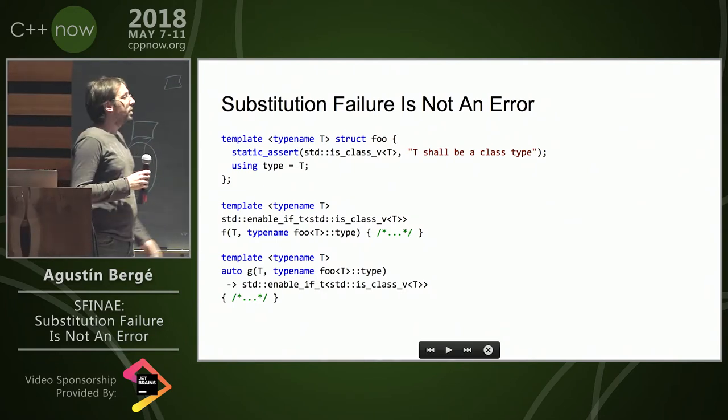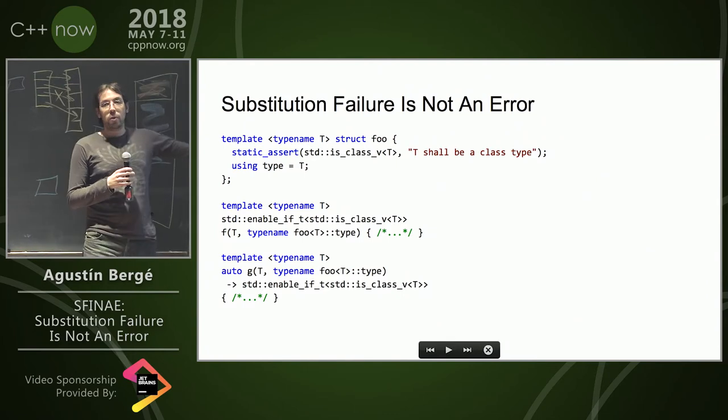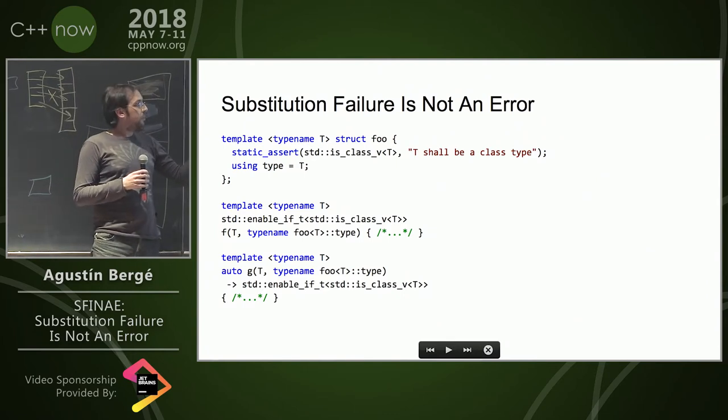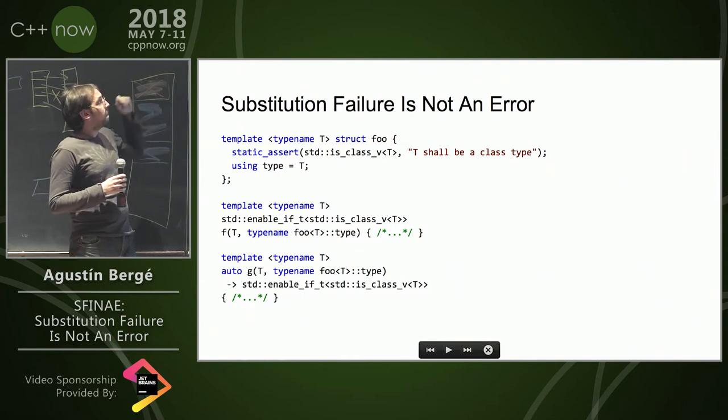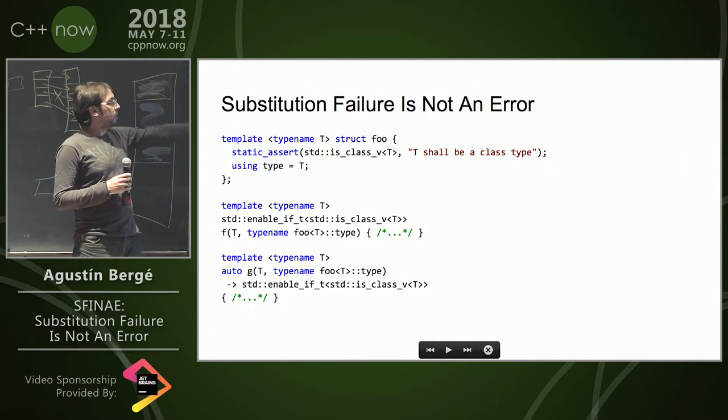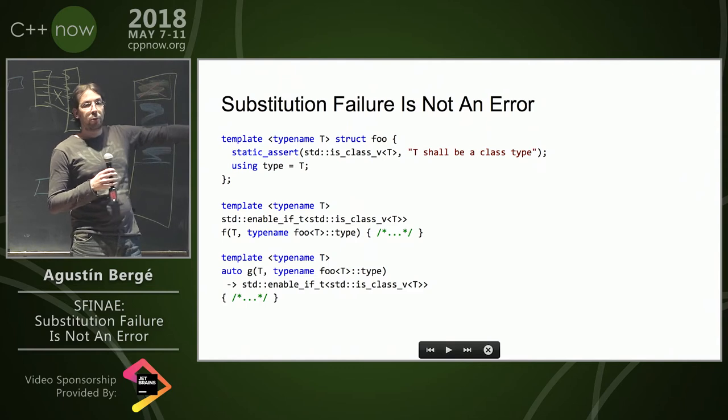The second one, on the other hand, has to perform substitution of foo of t first. So if t is not of a class type, we're going to hit the static assertion. The static assertion is not in the immediate context, so this function is not actually SFINAE-friendly.